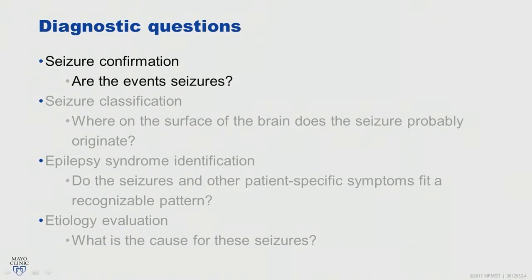What are those questions? The first question is: are these events seizures? Because not all recurrent events are epileptic. Once you decide that these may be seizures and they are epilepsy, the next question is where on the surface of the brain does the seizure probably originate — whether this is focal or generalized epilepsy.